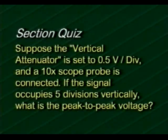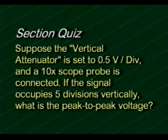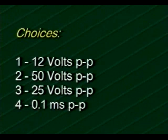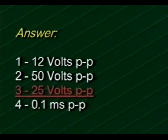Let's check how well you've mastered the material. Suppose the vertical attenuator is set to 0.5 volts per division and a 10x scope probe is connected. If the signal occupies five divisions vertically, what's the peak-to-peak voltage? The choices are: 12 V p-p, 50 V p-p, 25 V p-p, or 0.1 milliseconds p-p. The correct answer is choice three: 25 volts peak-to-peak.